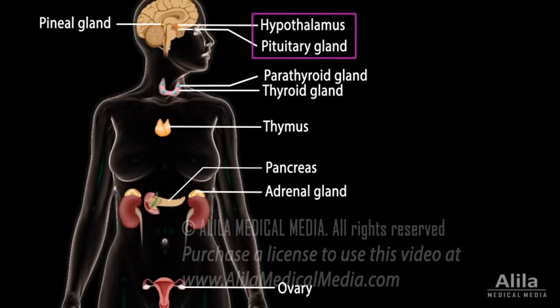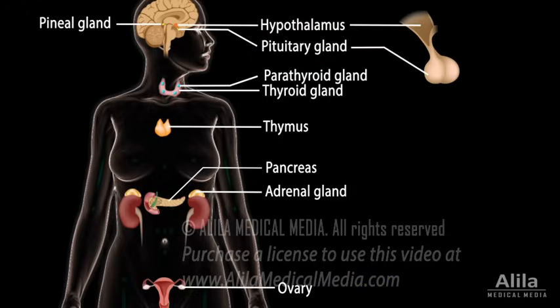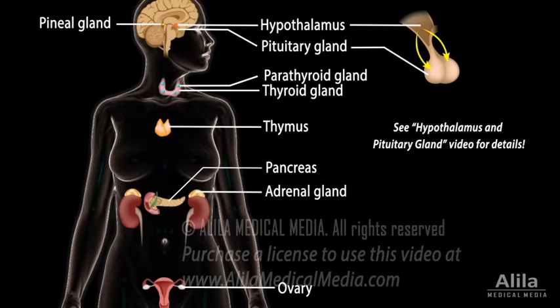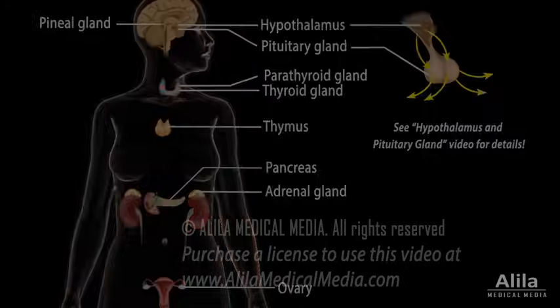On the other hand, the hypothalamus and pituitary gland play a more central, integrative role. The hypothalamus is also part of the brain. It secretes several hormones called neurohormones, which control the production of other hormones by the pituitary. Thus, the hypothalamus links the nervous system to the endocrine system. The pituitary is known as the master gland because it controls the functions of many other endocrine glands.